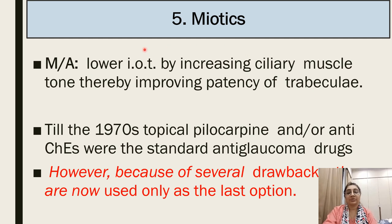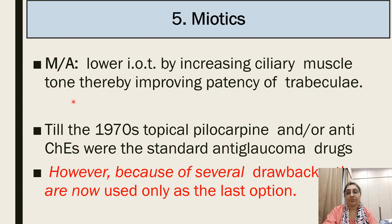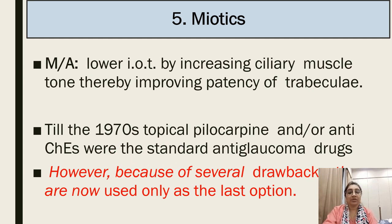Miotics — physostigmine and pilocarpine — lower intraocular tension by increasing ciliary muscle contraction, thereby improving potency of the trabecular meshwork. Until 1970, topical application of pilocarpine and anticholinesterases were the standard anti-glaucoma drugs; however, due to several drawbacks and better availability of other drugs, miotics are now only a last option.